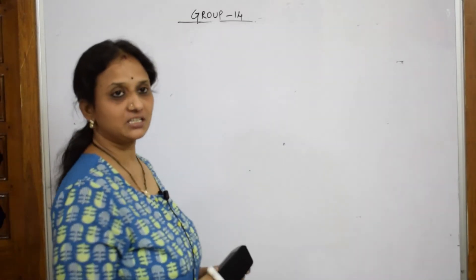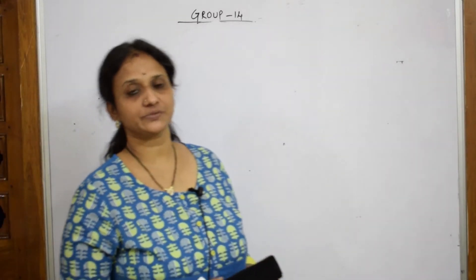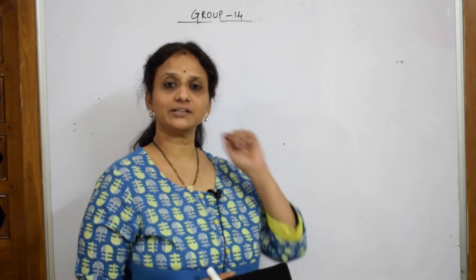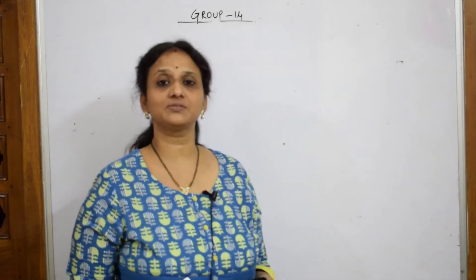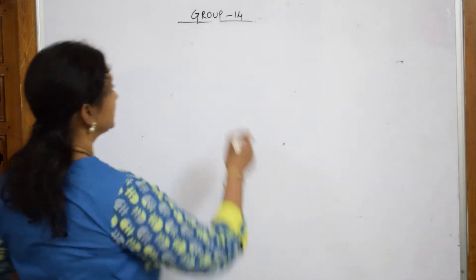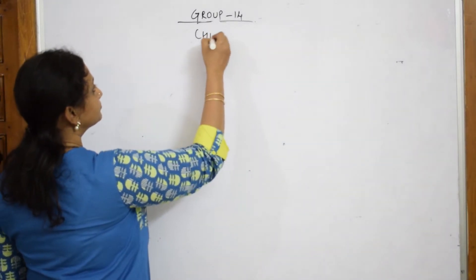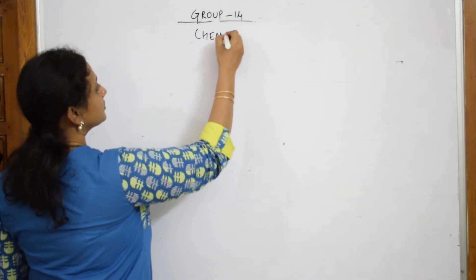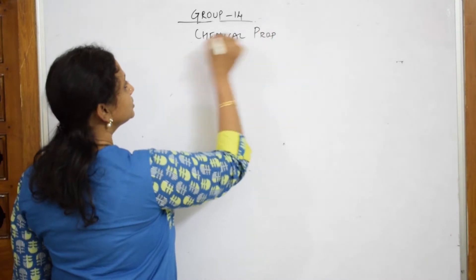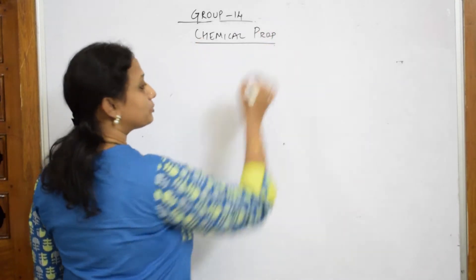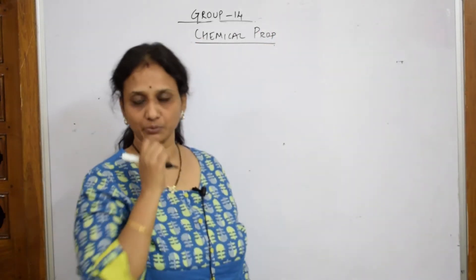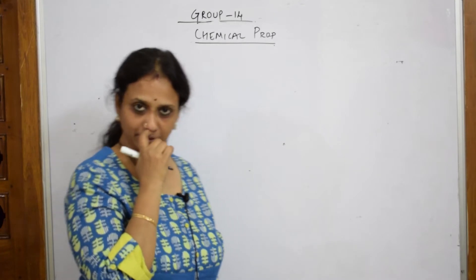Alright, so we have done with the preparations of carbon monoxide and carbon dioxide. Let us come back and do the chemical properties of carbon monoxide and carbon dioxide. So let us start. In chemical properties, let us list out the important chemical properties of carbon monoxide and carbon dioxide.